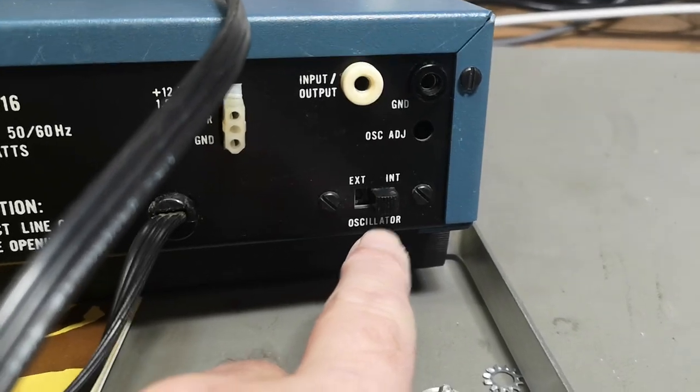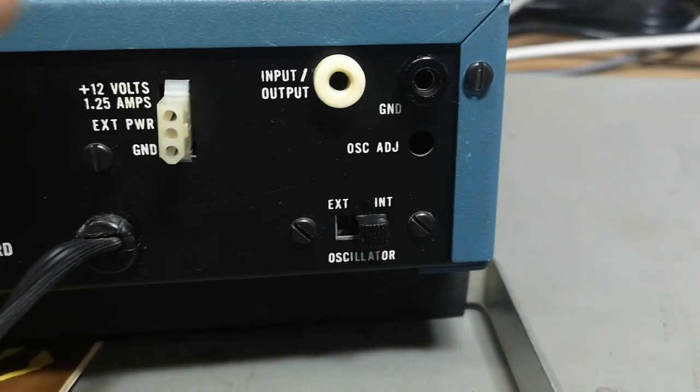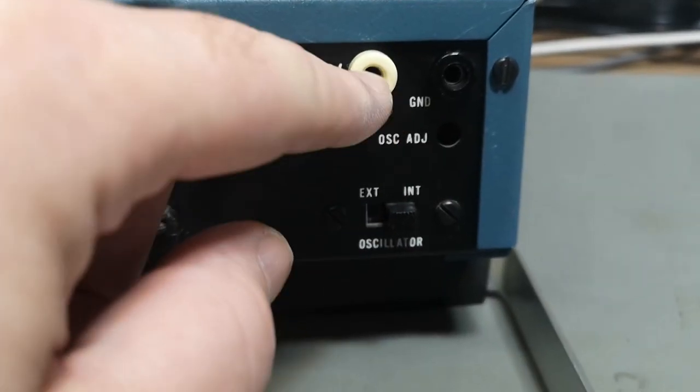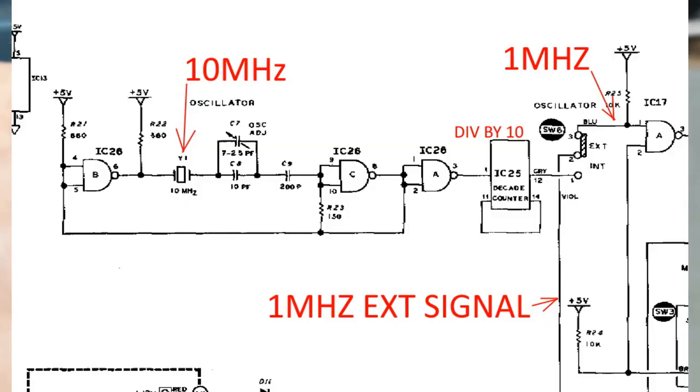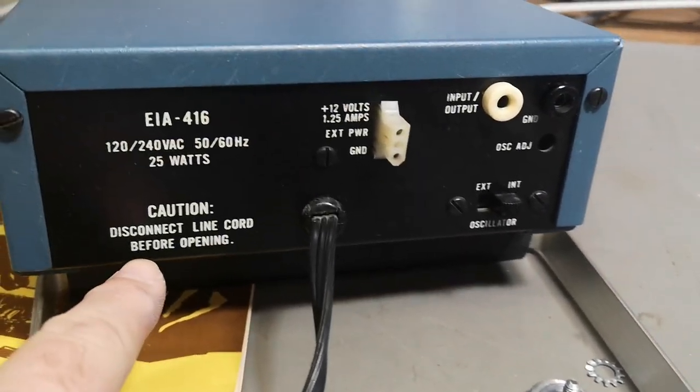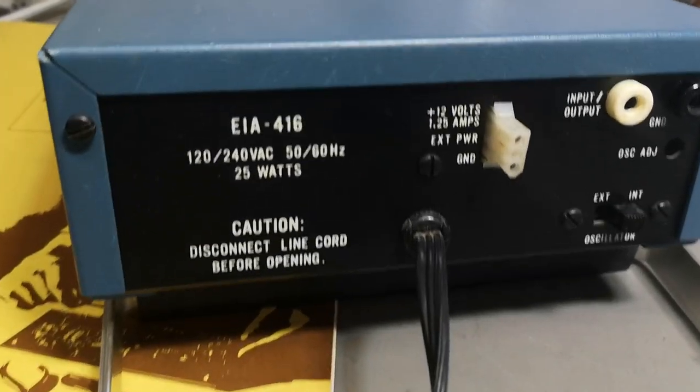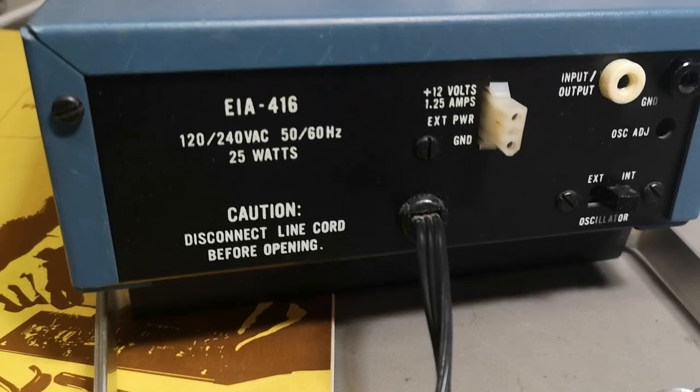This is the oscillator selection, internal or external, adjustment for the oscillator frequency. Here we got some bananas for the oscillator, so this can be input or output depending if you are running internal or external. It's all in the same plug. We better be careful, I will disconnect the line cord.